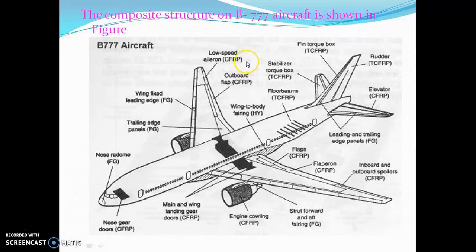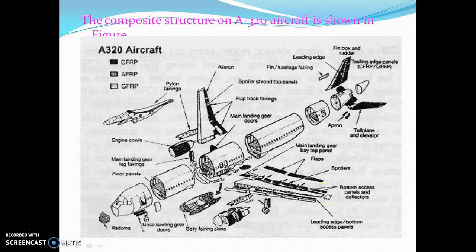The B7 series also uses CFRP for elevators, leading and trailing edges, and other components. The composite structure of the EHB20 also uses carbon fiber reinforced polymers and glass fiber reinforced polymers.